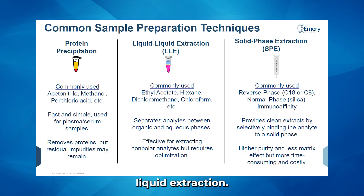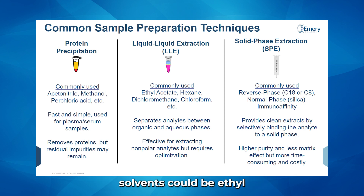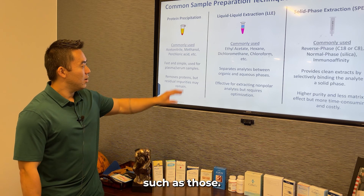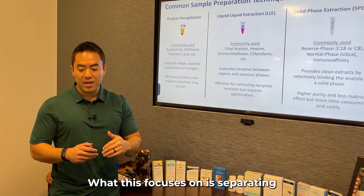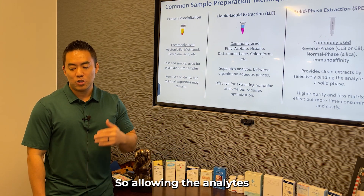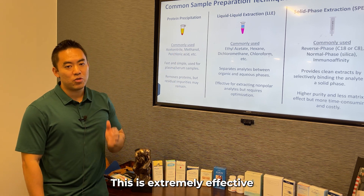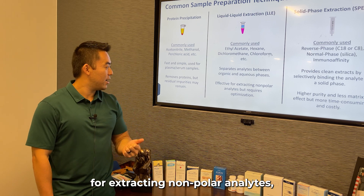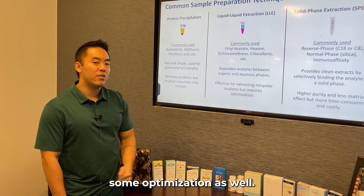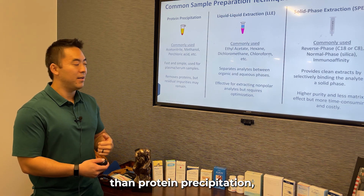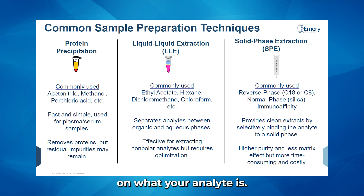The second most common is liquid-liquid extraction, often abbreviated LLE. Commonly used solvents include ethyl acetate, hexane, dichloromethane (DCM), chloroform, or other organic solvents. This focuses on separating between the organic and aqueous phases, allowing the analytes to go into the organic phase. It is extremely effective for extracting non-polar analytes, but may require some optimization. A little more complex than protein precipitation, but still successful depending on what your analyte is.